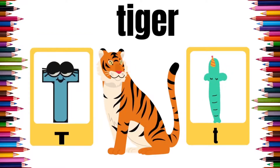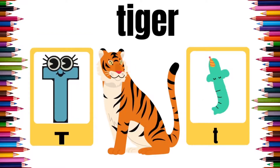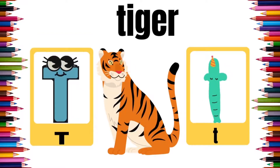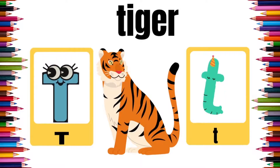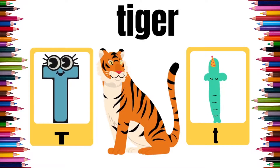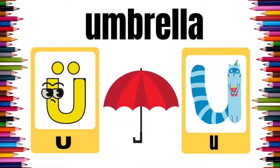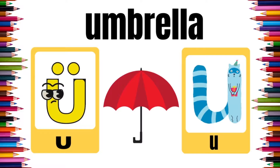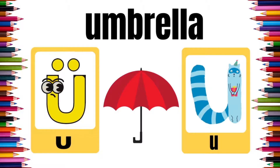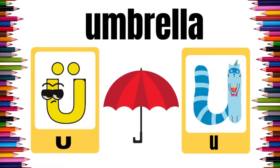T is for Tiger. T, T, Tiger. U is for Umbrella. U, U, Umbrella.